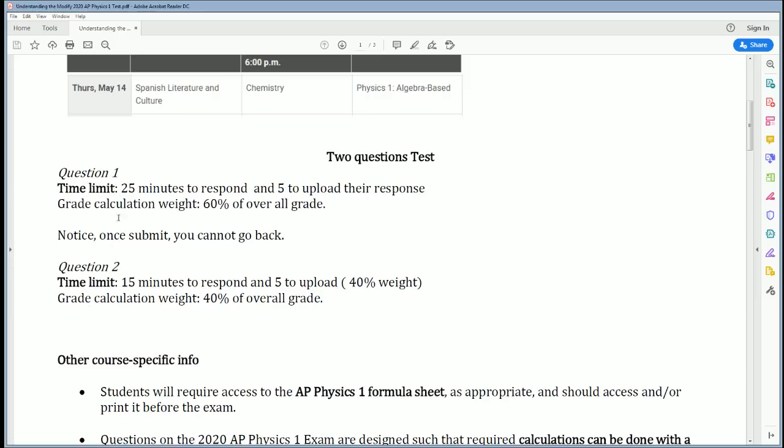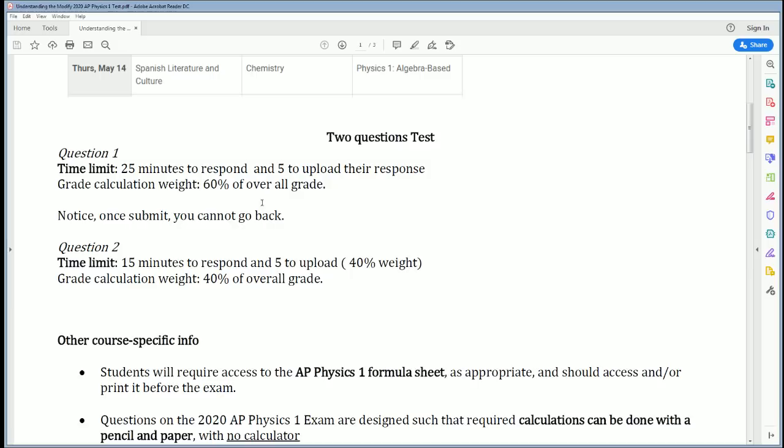Question 1 is 25 minutes to respond and five minutes to upload your responses. Its calculated weight is 60% of the overall grade. If you can just get Question 1, you can get a 4, because based on last year and previous years, 60% overall is basically around a 4. Notice, once you have submitted your answer for Question 1, you cannot go back.